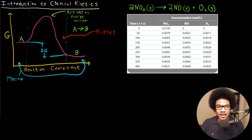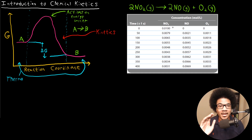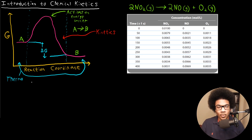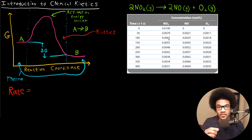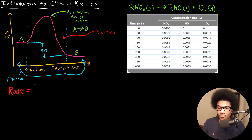The example we're looking at is the decomposition of NO2 — nitrogen dioxide — into nitrogen monoxide and oxygen gas. This equation is already balanced, and we have data showing the concentration of our reactants and products over time. You can see how the concentration of the reactant is going down and the concentration of the products is going up. That automatically gives us two separate ways to view the rate of these reactions: the rate of disappearance of our reactant, because the reactant is being consumed, or the rate of production of the products.